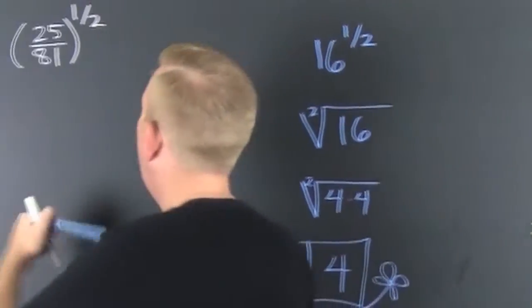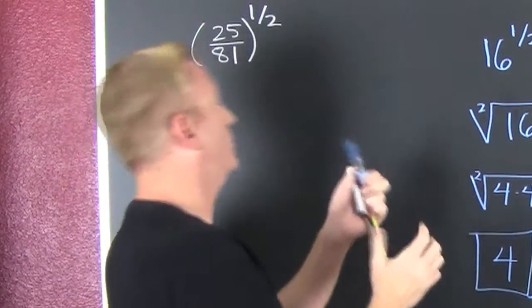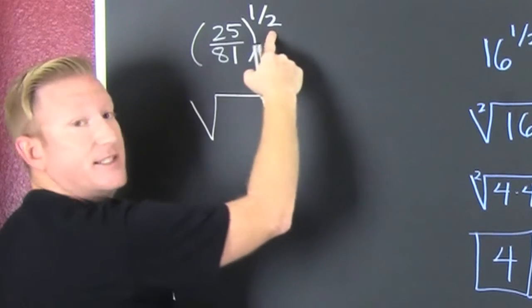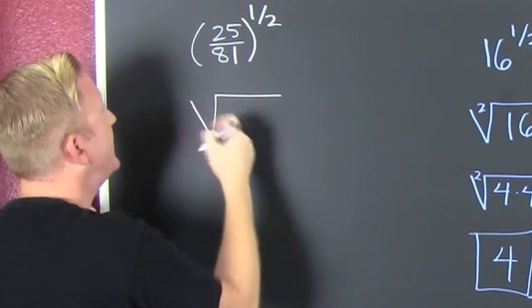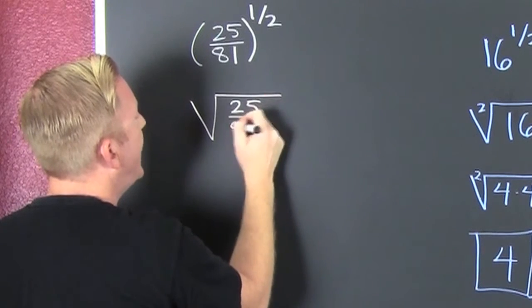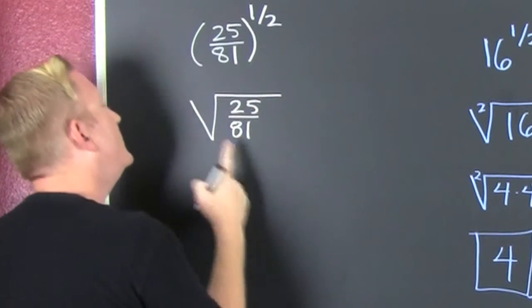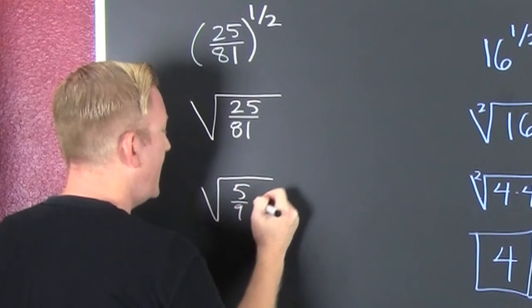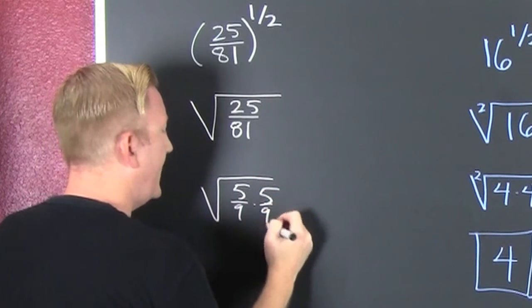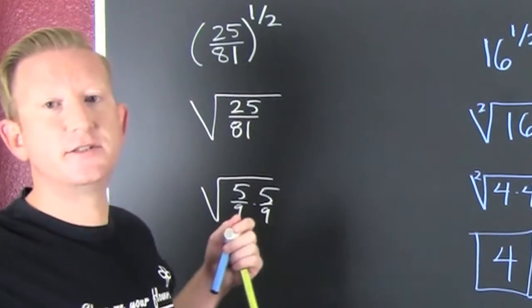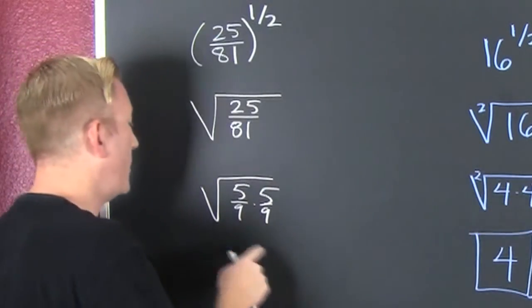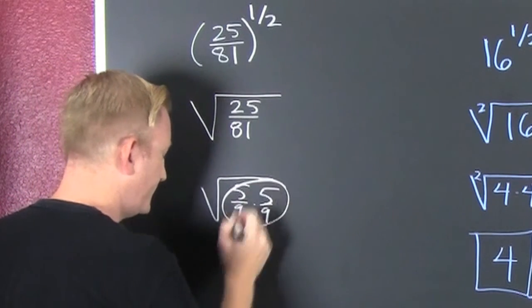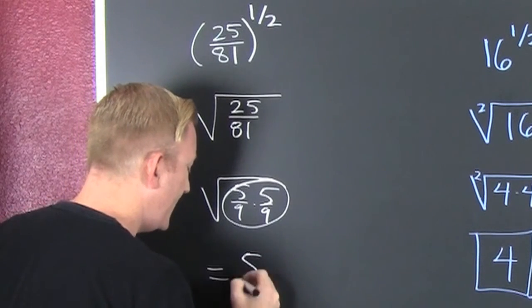What's next? This guy over here. That's the square root because that's a two, that means there's a two in the index, and then there's a 25 over 81. Now you can see that as the square root of five over nine times five over nine, because knock knock, who's there, how do you multiply fractions? Straight across. And we see we have a pair of five ninths, so that's five ninths.